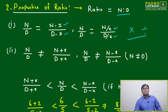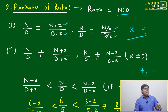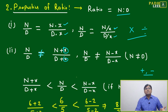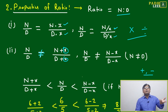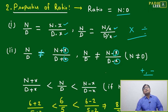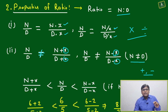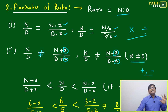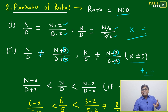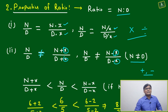Now, if we do addition or subtraction, there will be a change. n by d will never equal (n + x) by (d + x). If you are multiplying, the ratio doesn't change, but if you are adding, the ratio will change. Similarly, n by d will never equal (n − x) by (d − x). One condition applies: the numerator should not be equal to the denominator — for example, 3 by 3 — because then the ratio becomes an integer and these properties won't hold.